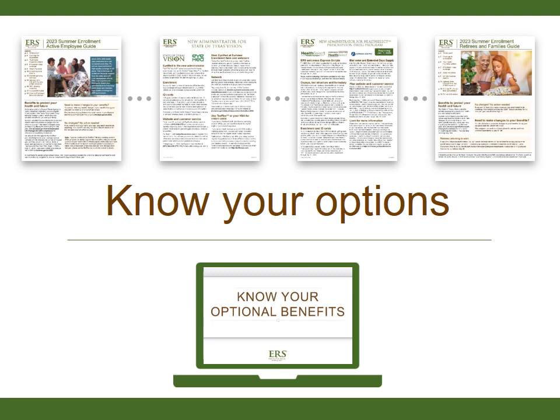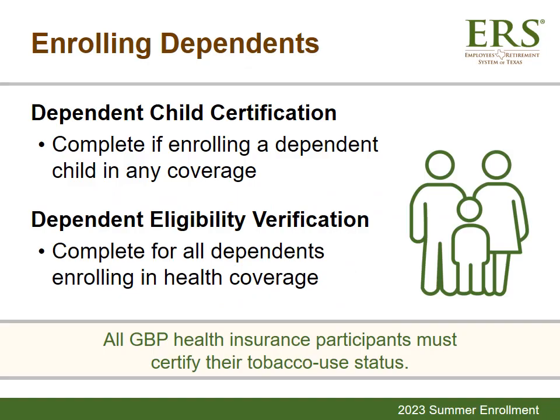If you have already completed the Dependent Child Certification process, Dependent Eligibility Verification, or the Tobacco Use Certification for yourself and dependents currently enrolled, you don't have to complete it again. If you enroll a new dependent in coverage during Summer Enrollment, you'll need to complete a few extra steps. If you enroll new dependent children in any GBP coverage, you'll need to complete the Dependent Child Certification, and you won't be able to enroll them until the certification is complete.